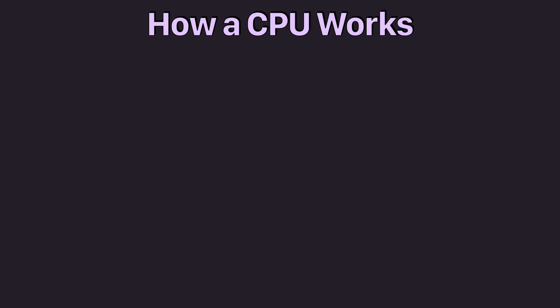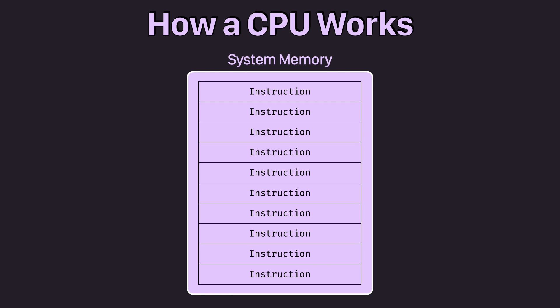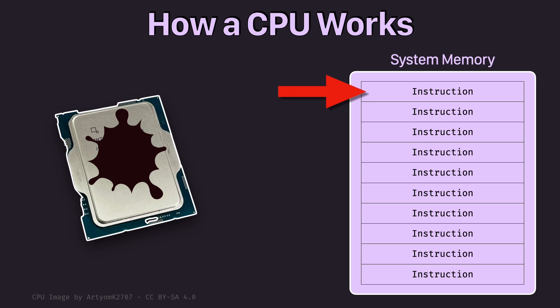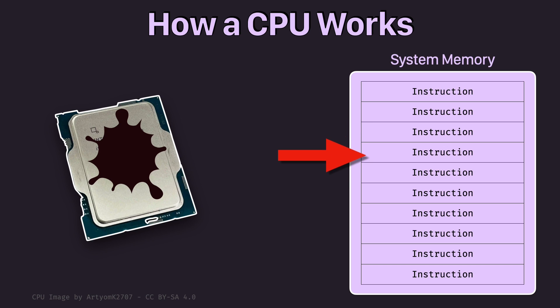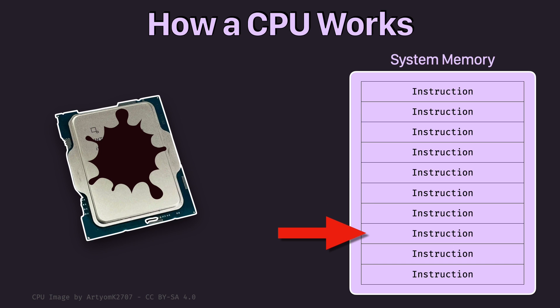A CPU receives these instructions from the system memory where they are all laid out in sequence. This fictional CPU is fetching one instruction from the system memory and doing whatever it is instructed to do. Once it is done, it will fetch the next instruction from memory. This process is repeated many times per second based on the clock speed of the chip. So if our fictional CPU is operating at one gigahertz, it can execute one billion instructions per second — if one instruction only takes one cycle to execute. Some instructions might take more than one cycle, and modern CPUs usually have tricks to mitigate that, but that is off topic for now.